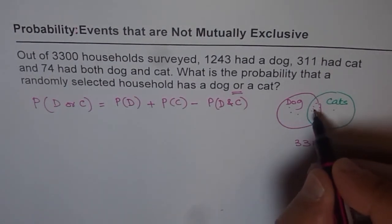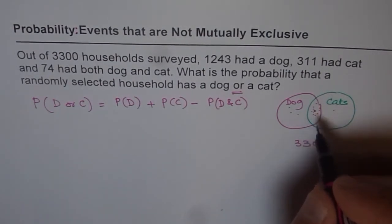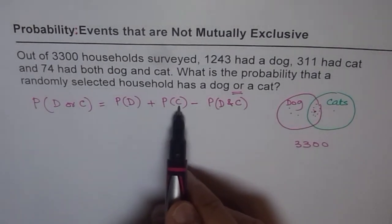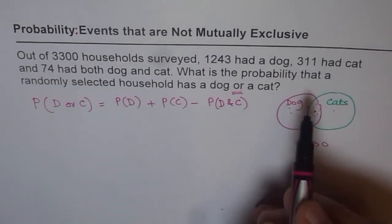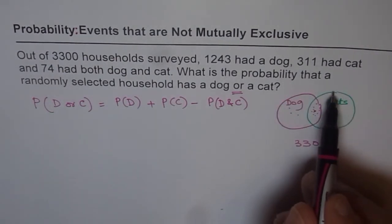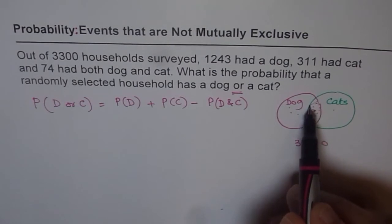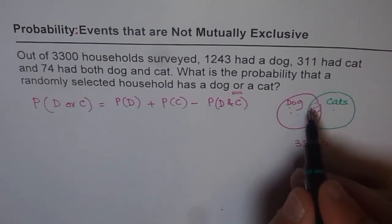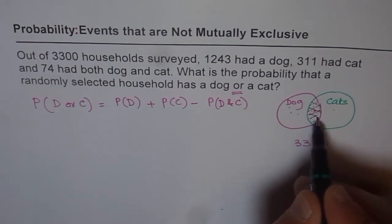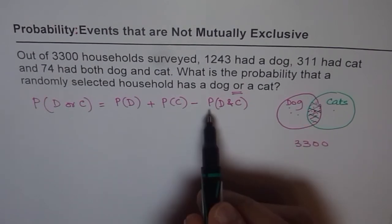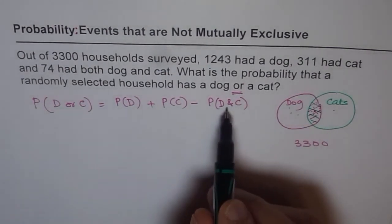Since this portion, which is dog and cat is being added twice, when we do probability of dog and probability of cat, you can see here, probability of dog is like this circle, probability of cat is that circle. So in between, we added this two times, once with probability of dog and the second time with probability of cat. Therefore, we need to take it out once.